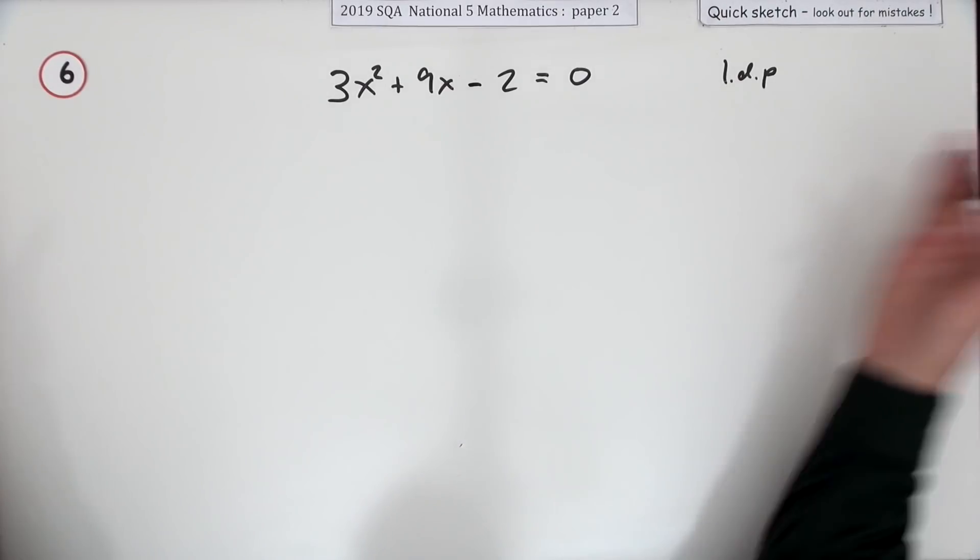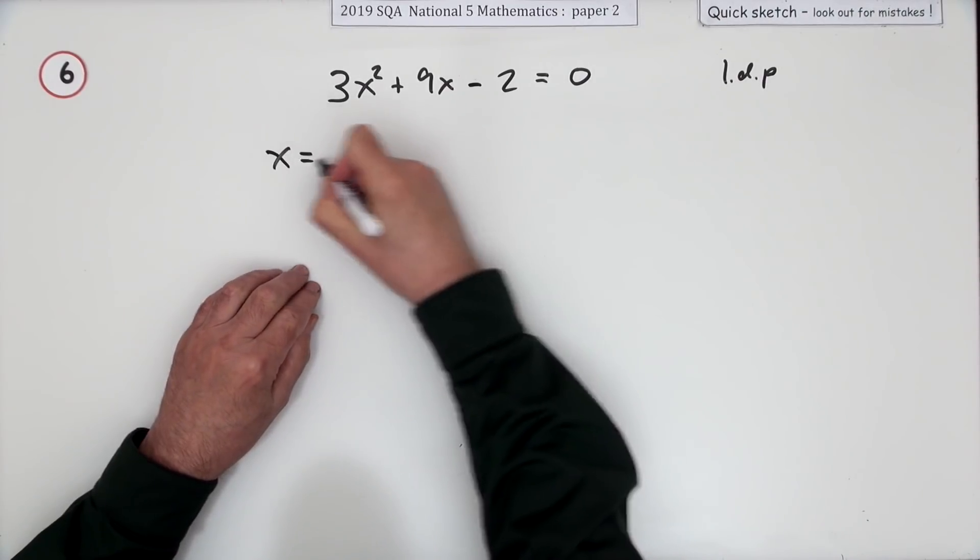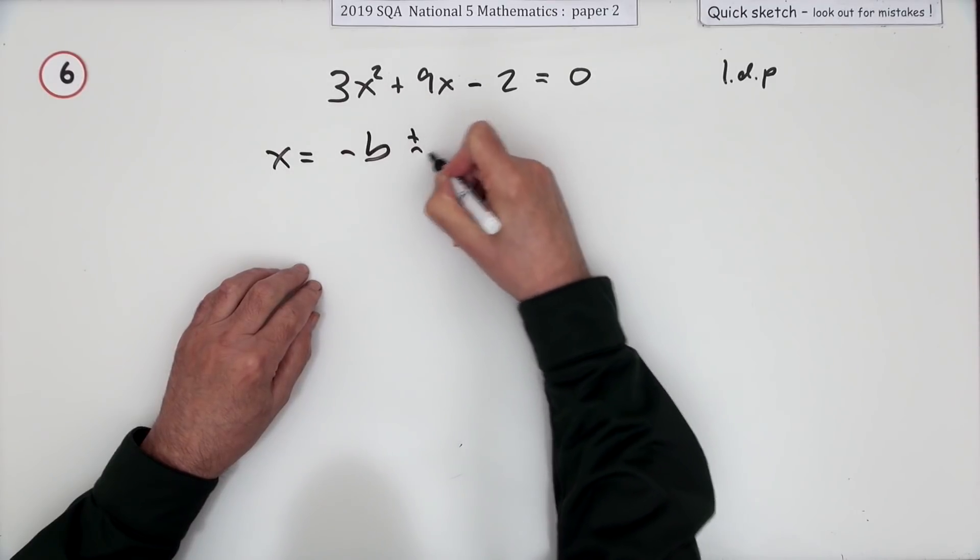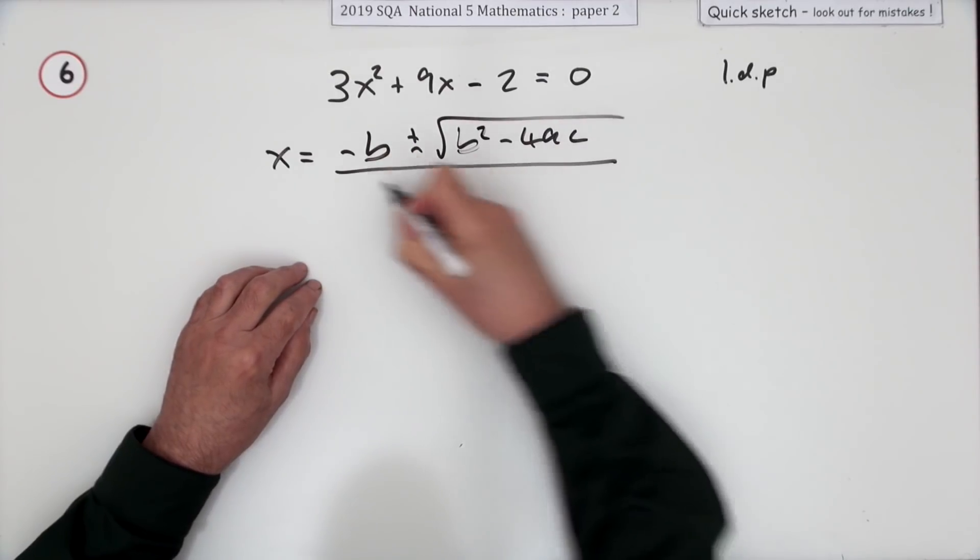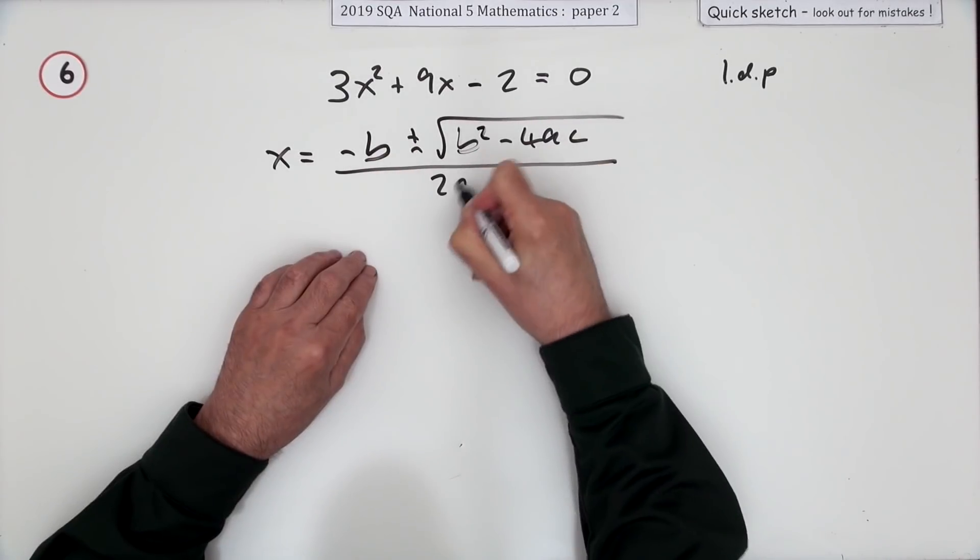When you look up the formula, it'll go: negative b plus or minus the square root of b squared minus 4ac. Watch—it goes under both of them, all over 2a.